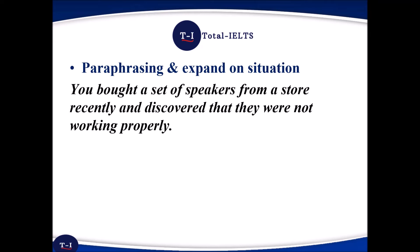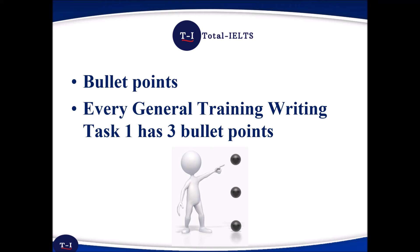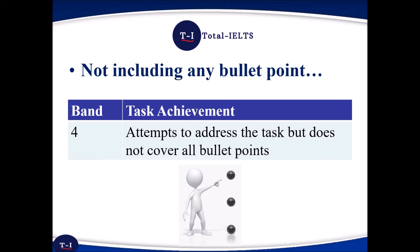For the purpose, you should paraphrase and expand on the situation. Here the situation is you bought the speakers and discovered they were not working properly, and here is a sample purpose. So after you've stated your purpose, you need to address the bullet points. Every General Training Writing Task 1 has three bullet points. If you forget to include any of them, it will result in a minimum score of four in task achievement.